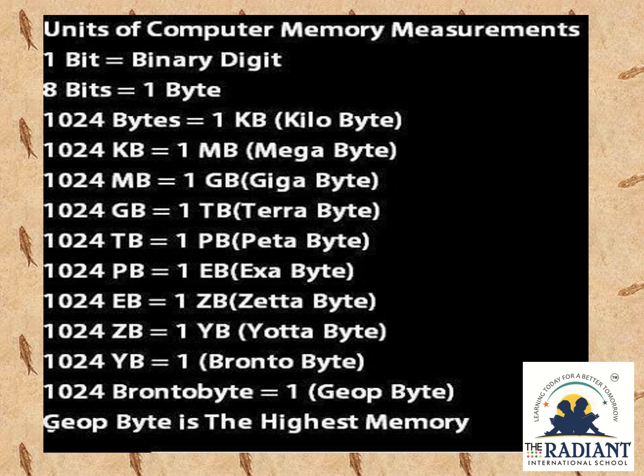Let's look at this memory chart. 8 bits makes 1 byte. Then 1024 bytes makes 1 kilobyte. 1024 kilobytes makes 1 megabyte. 1024 megabytes makes 1 gigabyte. 1024 gigabytes equals 1 terabyte.